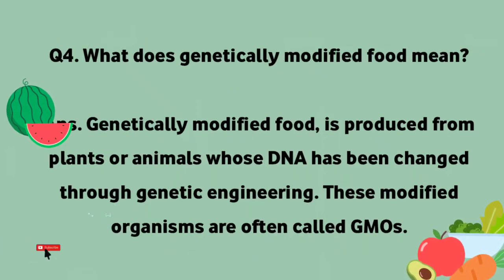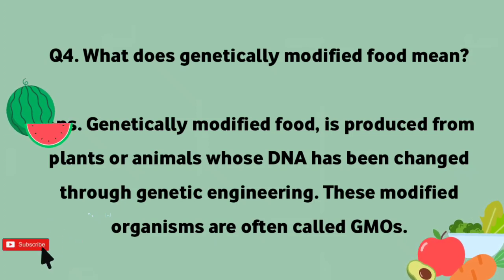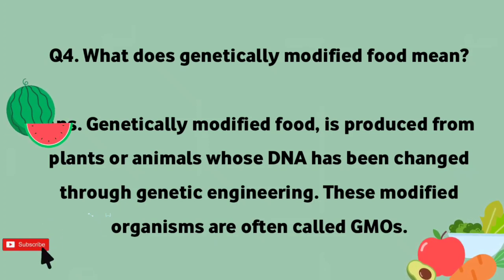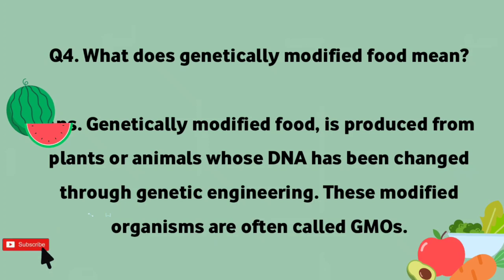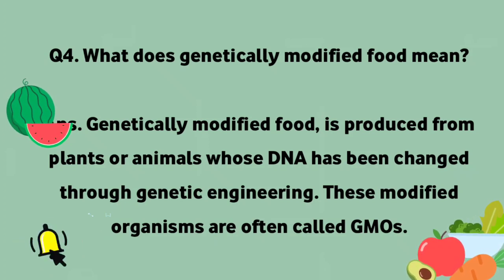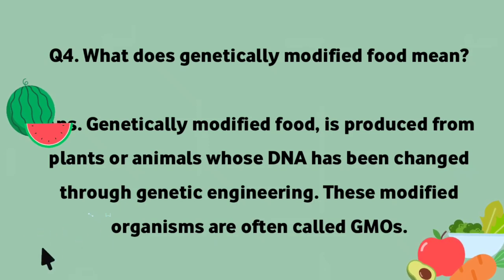What does genetically modified food mean? Genetically modified food is produced from plants or animals whose DNA has been changed through genetic engineering. These modified organisms are often called GMOs.